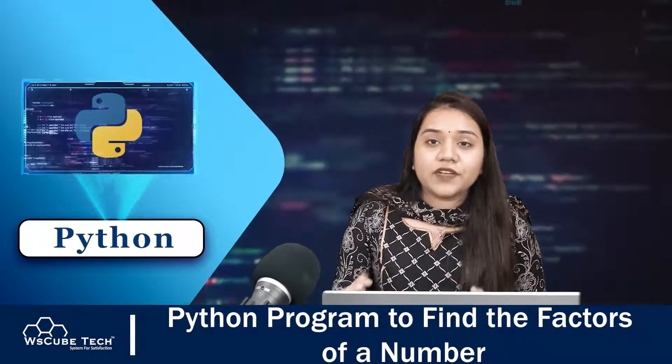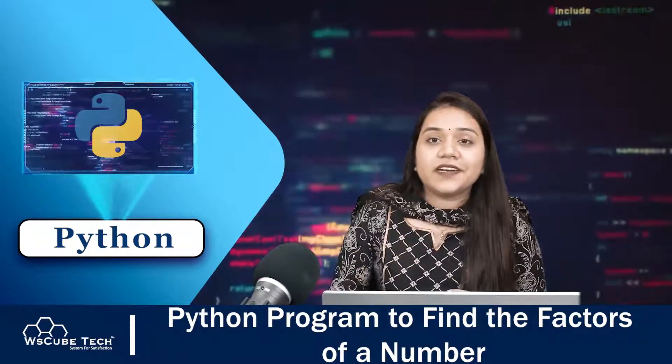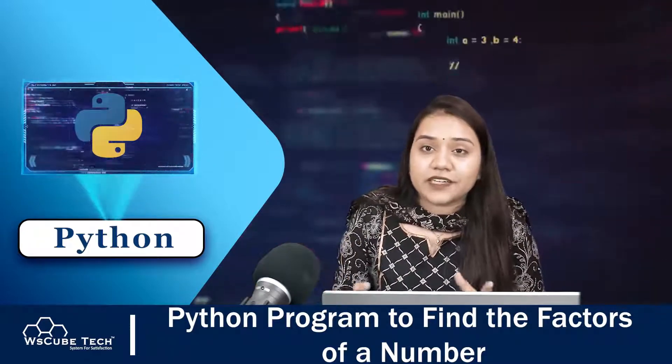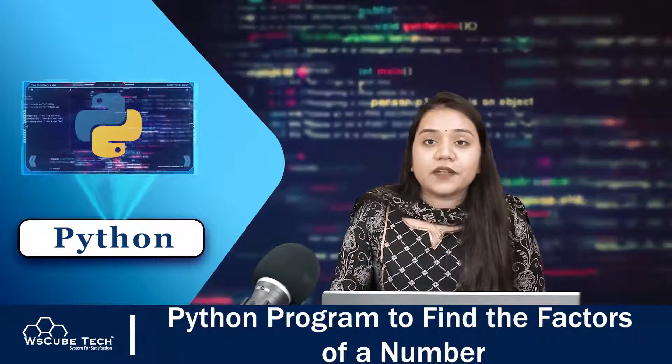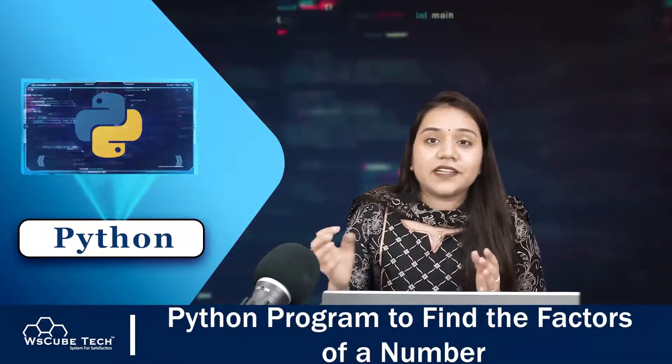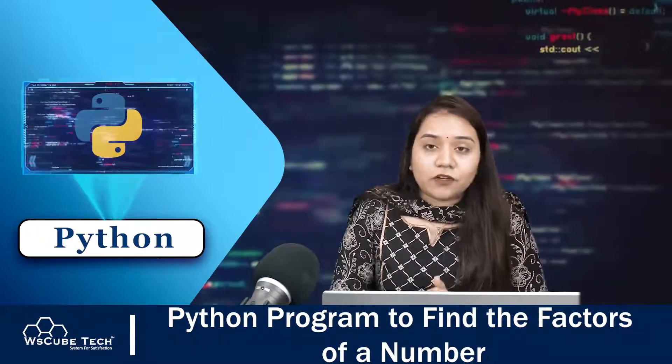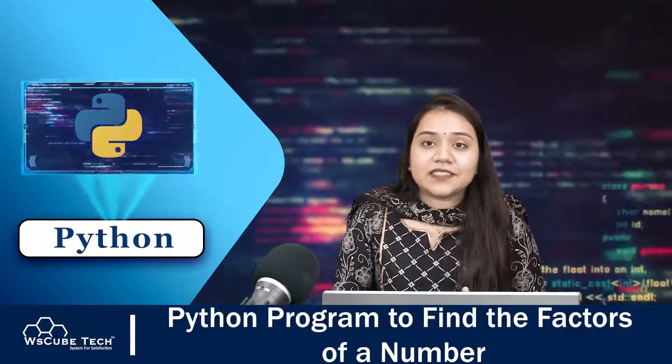So guys, to find the factors of a number, all we need to do is first of all take a user input for a number, and then we have to iterate it up to that number and give a condition that if any number that comes up to that range divides the number perfectly, in that condition that number is a factor of that number. So what we will be doing, we will be putting this logic inside the program and let's see how it turns out.